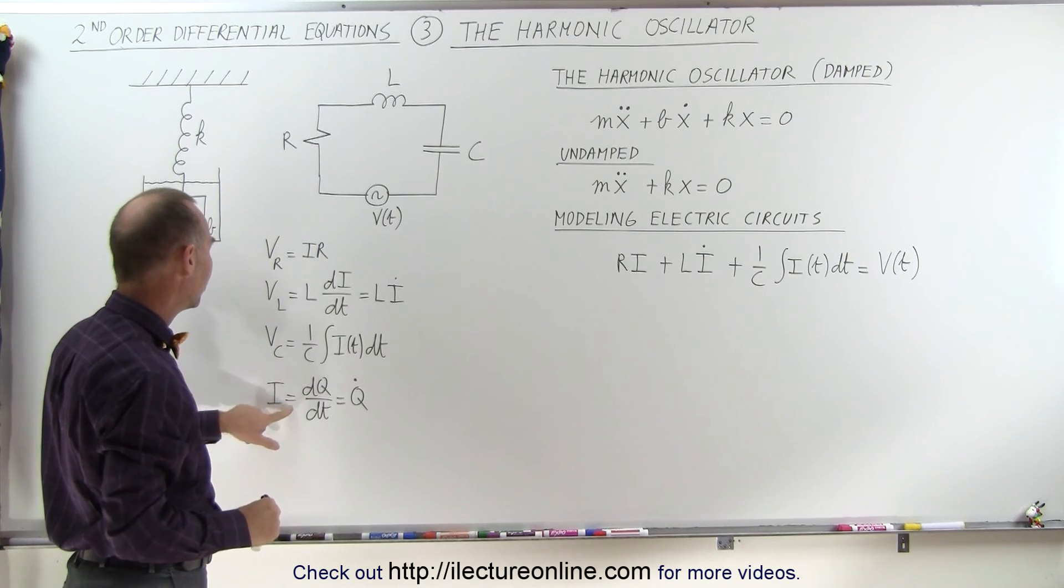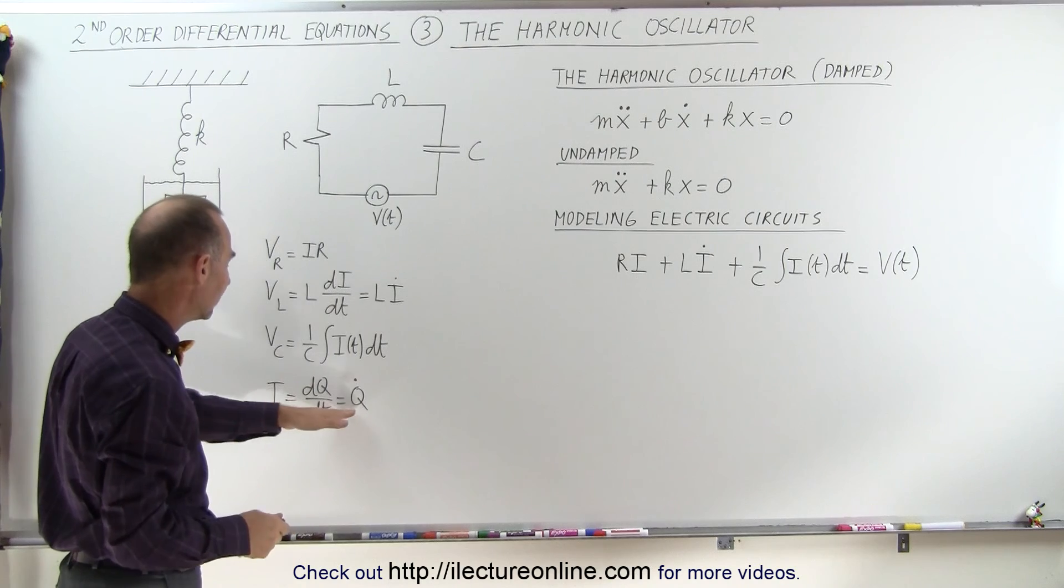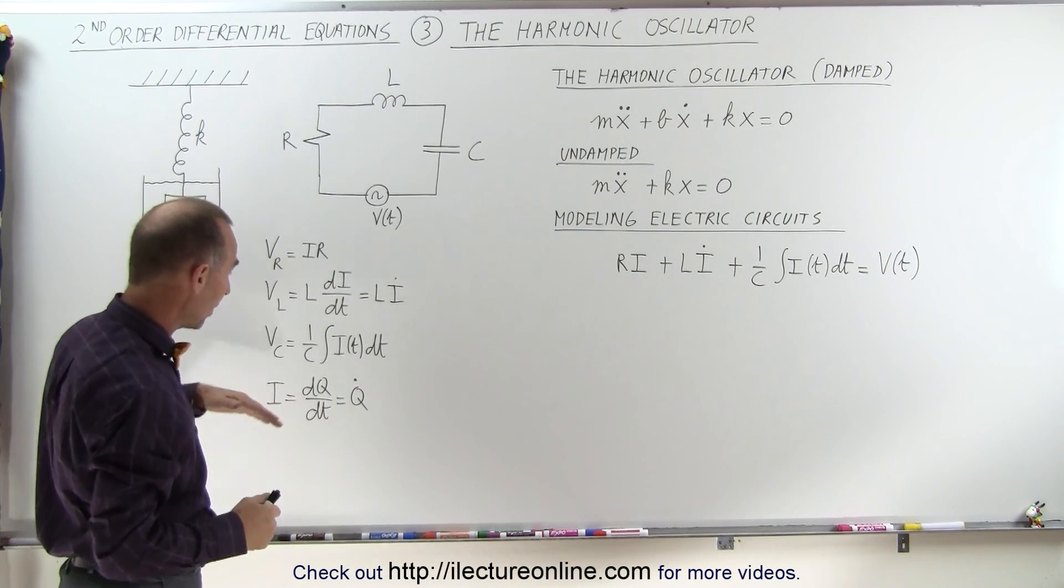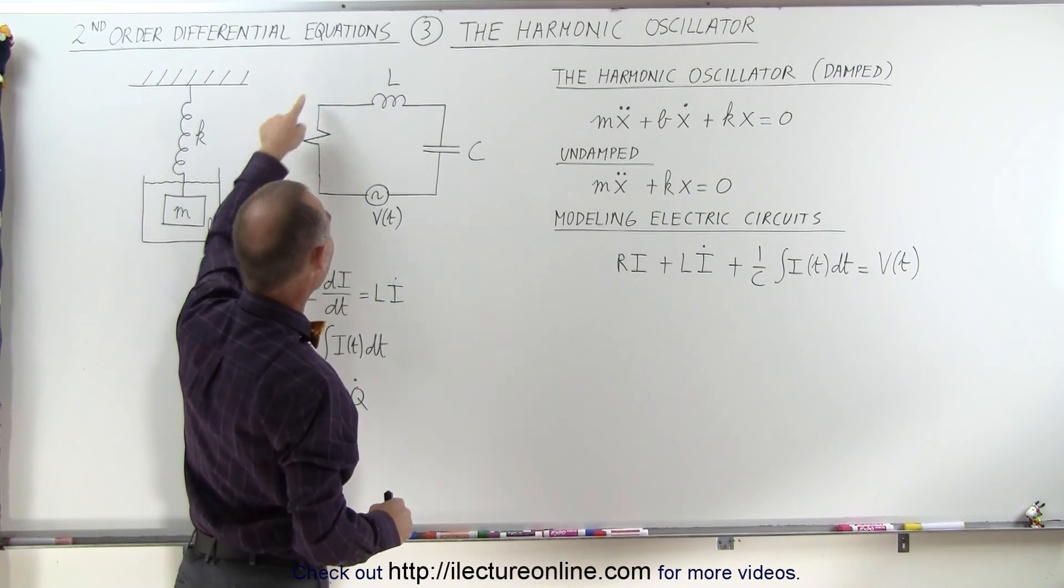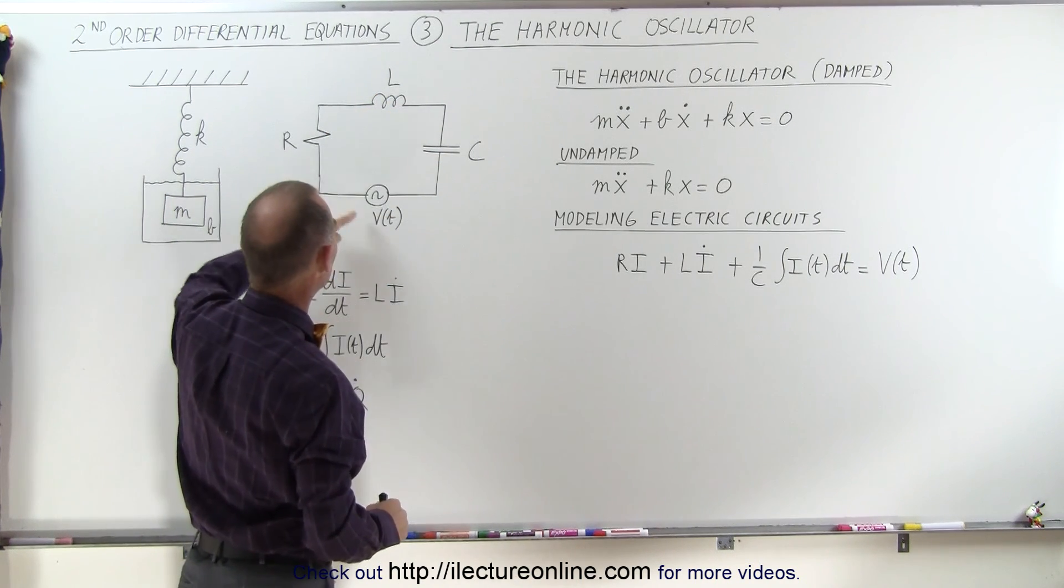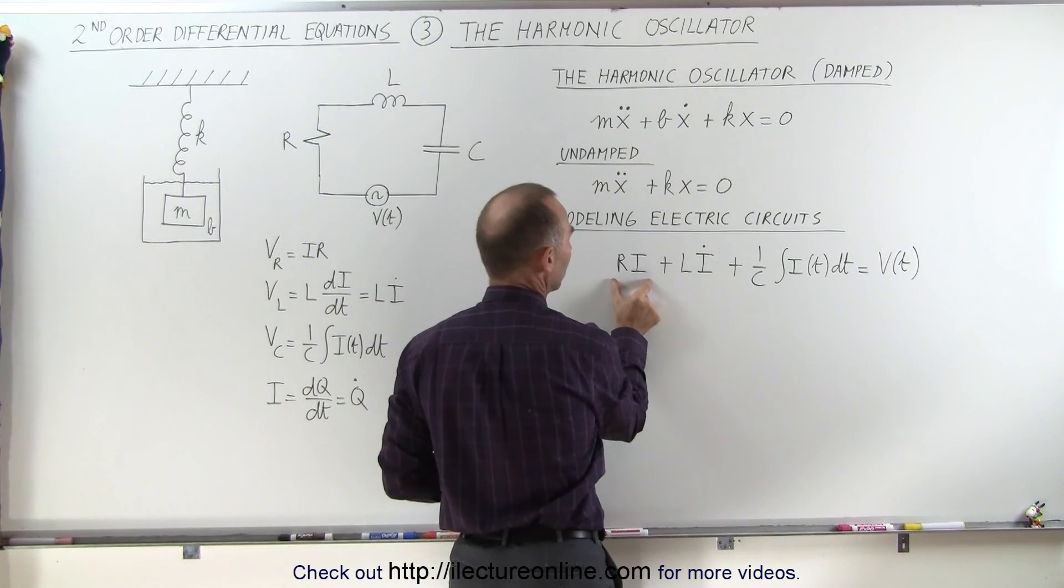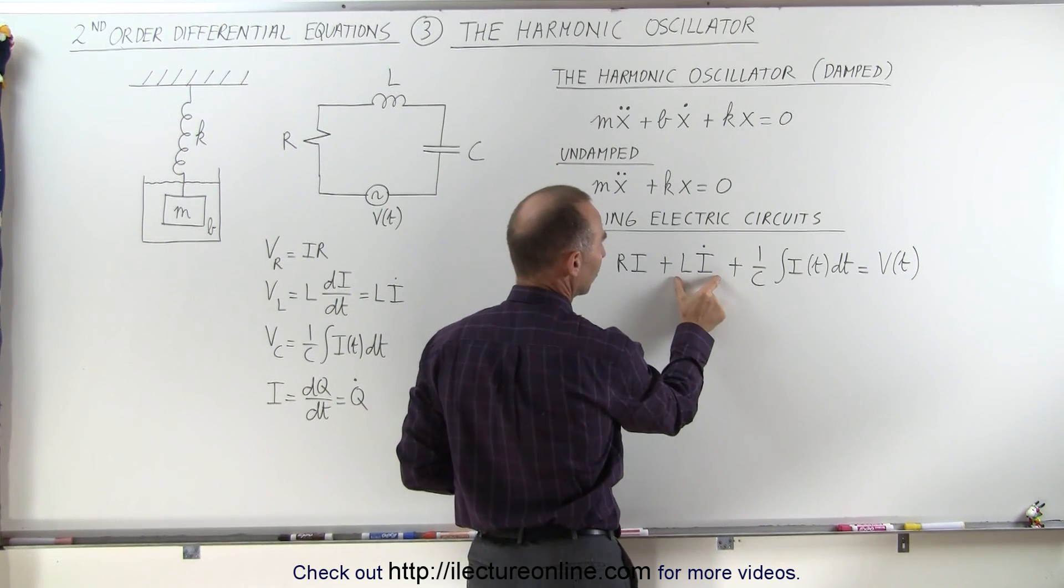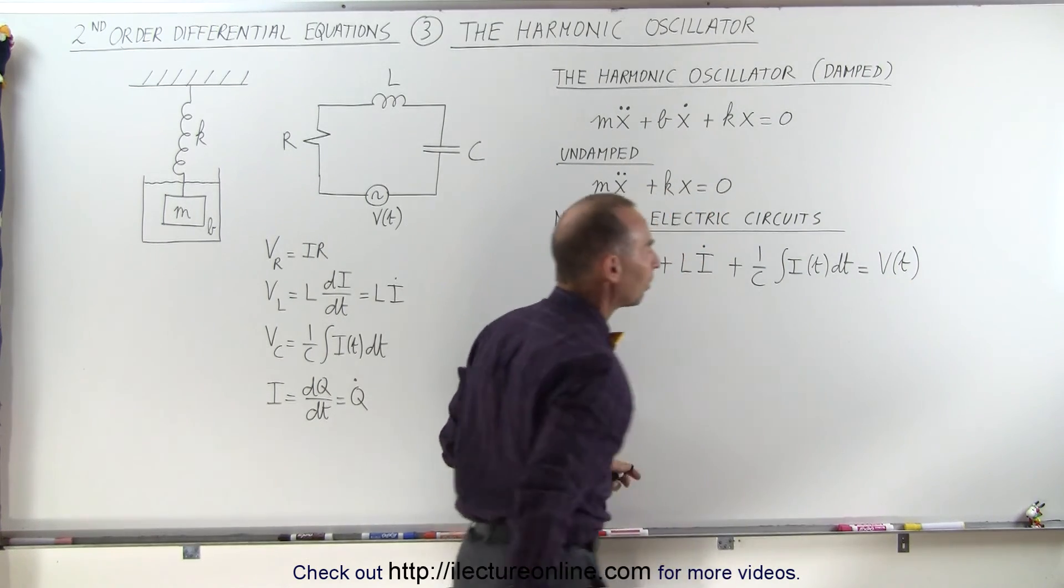Now, of course, I is equal to dq dt, which is q dot. That's another way of writing dq dt. Now, if we want to write the equation that models electronic circuits, we simply add up all the voltages around the circuit and set it equal to the voltage source. So the voltage across the resistor, the voltage across the inductor, plus the voltage across the capacitor equals the voltage of the supply.